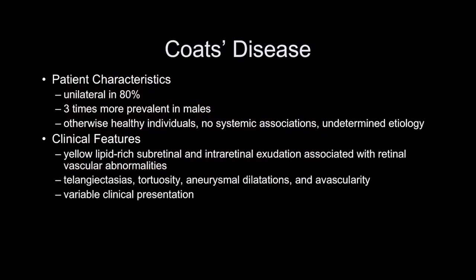Coates disease is usually unilateral in about 80% and is three times more common in boys. These individuals are otherwise healthy, with no systemic associations, and we don't really know what causes it. You get a yellow lipid-rich subretinal and intraretinal exudation associated with retinal vascular abnormalities, including telangiectasia, tortuosity of vessels, aneurysmal dilatations, and areas of avascularity. There is a variable clinical presentation.